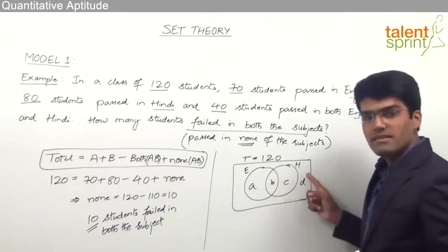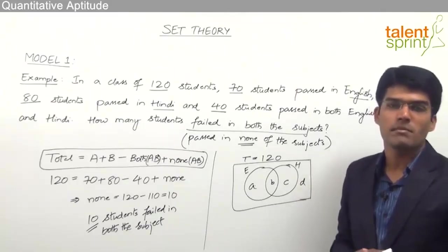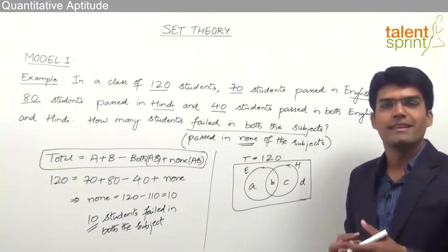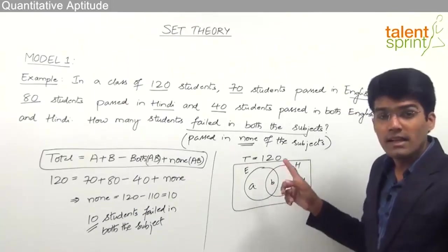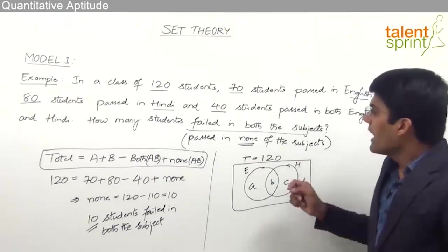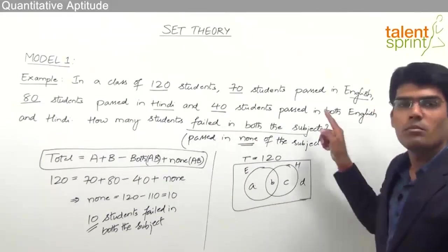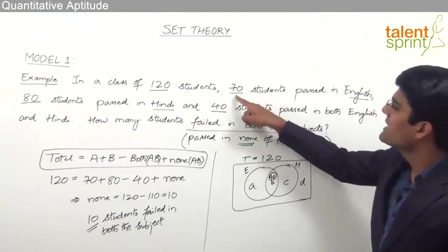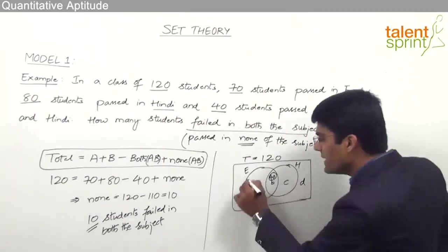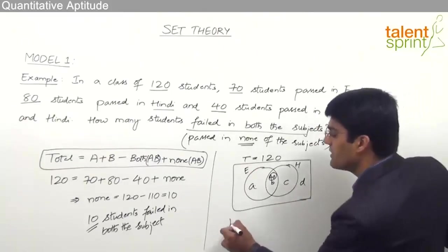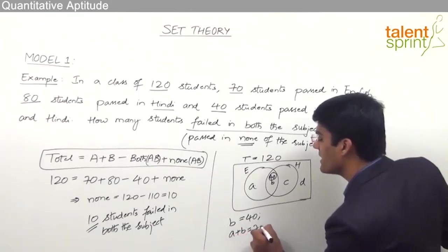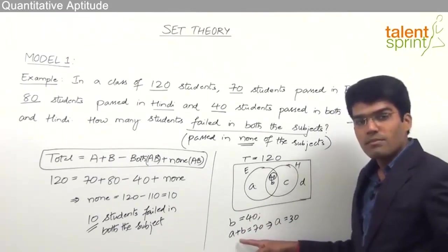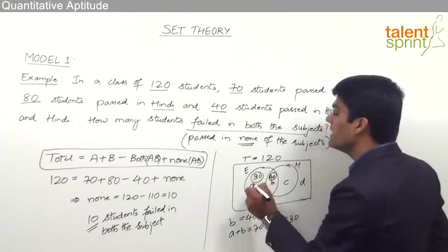When filling values, first fill the region overlapped by the maximum number of subsets. Region B is the overlapping part — English with Hindi. The question says 40 students passed in both English and Hindi, so B equals 40. Next, 70 students passed in English means A plus B equals 70. Since B is 40, A plus 40 equals 70, giving A equals 30. So 30 students passed only in English.